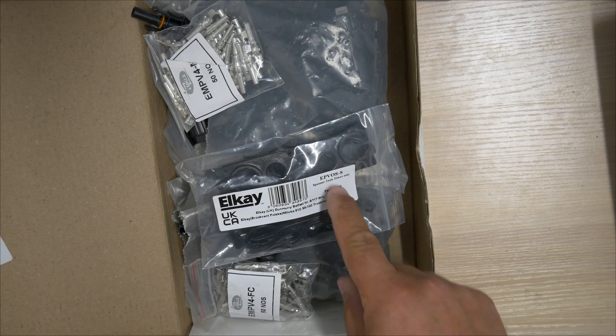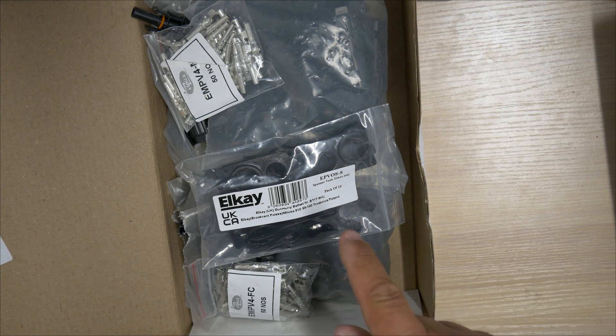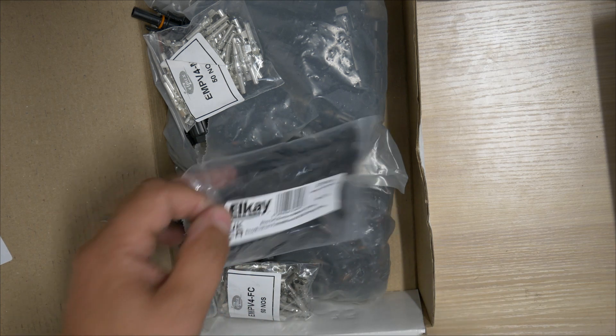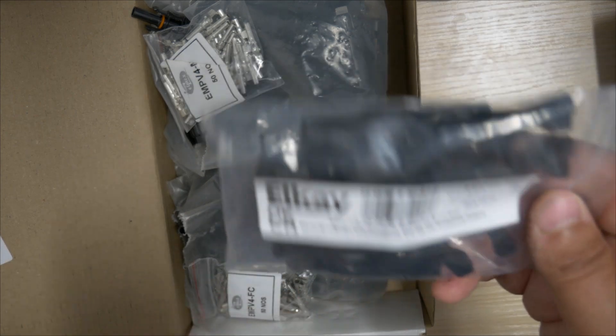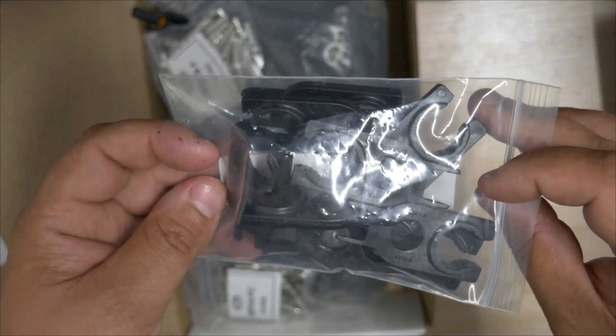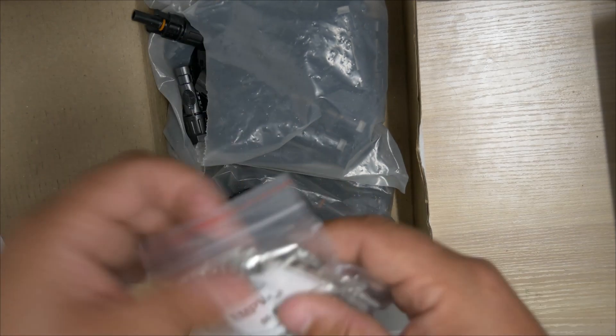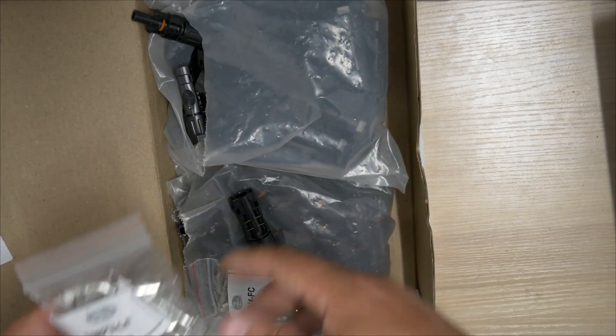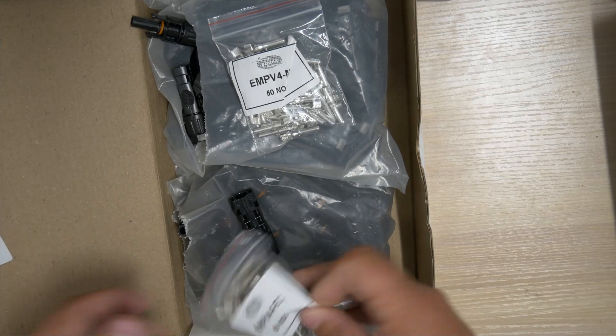So we have a box of 50 units and it comes with the EPV-OS-S, the spanner tool set. This is for tightening up the back of the glands and removing the connectors. Nice that that's included. And then we've got the 50 sets of each end.